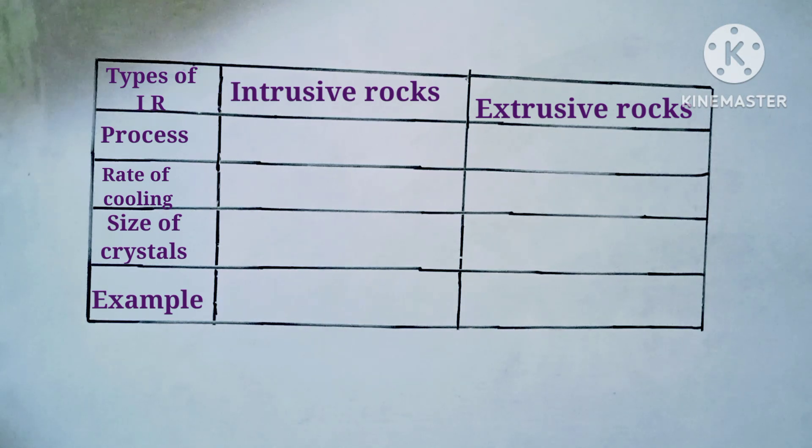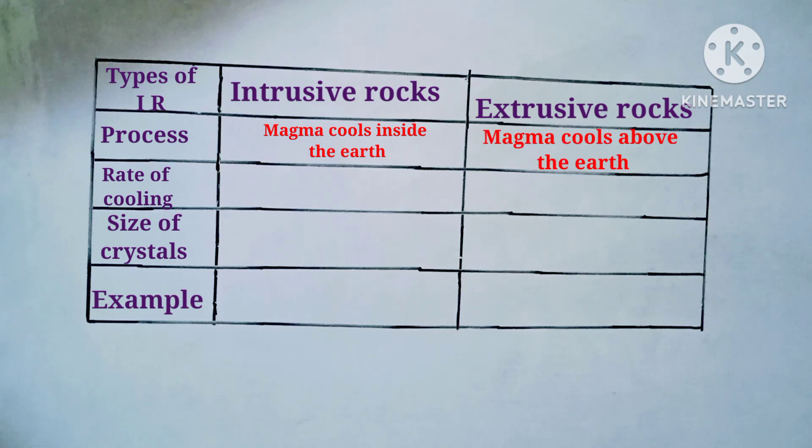Let us see the process of intrusive rocks: magma cools inside the earth. What is the process of extrusive rocks? Magma cools above the surface of the earth due to volcanic eruption.